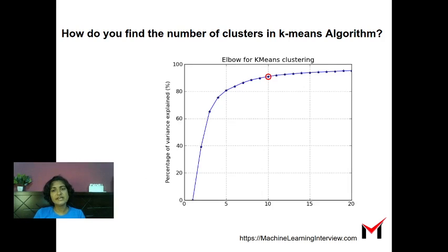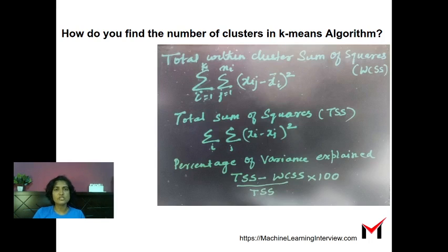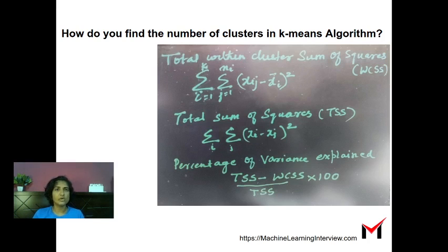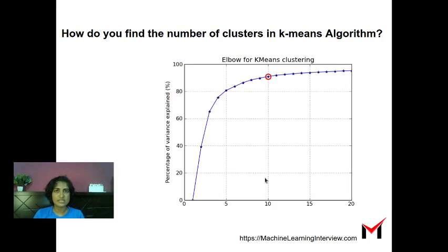Another metric is the percentage of variance explained. It uses the total within-cluster sum of squares, which tells us how cohesive the clusters are, and the total sum of squares, which reflects the overall variance in the data set and is not dependent on clustering. The percentage of variance explained is: total sum of squares minus total within-cluster sum of squares, divided by total within-cluster sum of squares. Here the trend is reversed — a higher value means better clustering.